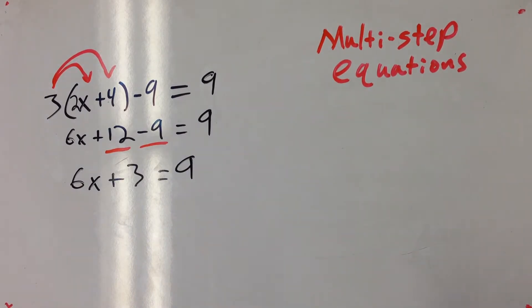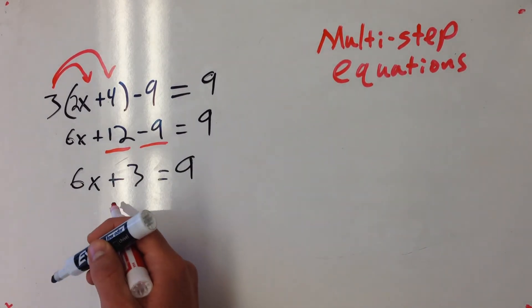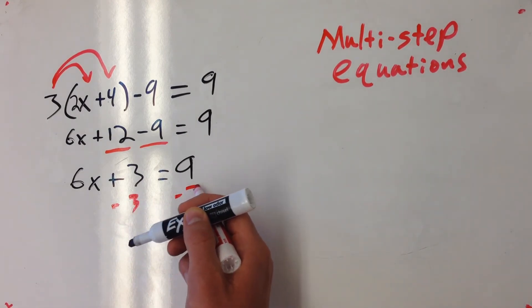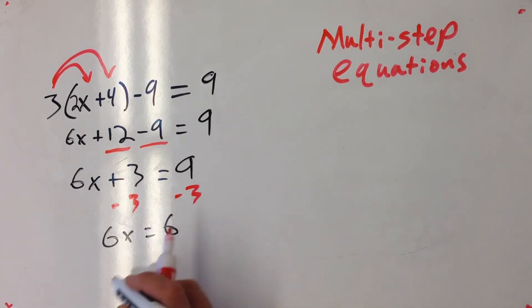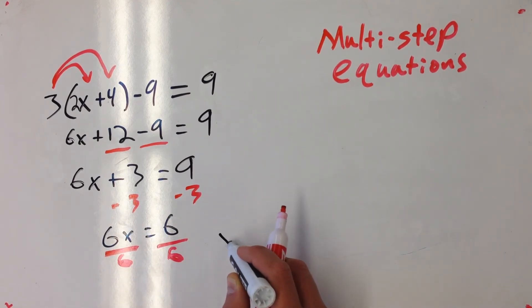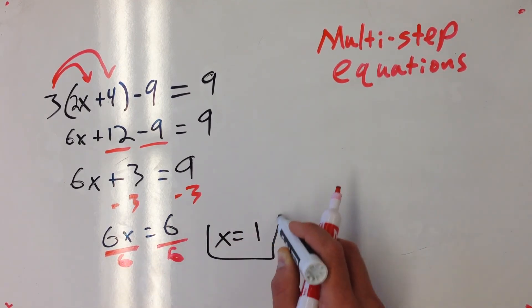And now we're at a little bit more familiar ground. This is a two-step equation. I need to subtract 3 from both sides and I'll get 6x equals 6, divide both sides by 6, and my final answer is going to be x equals 1.